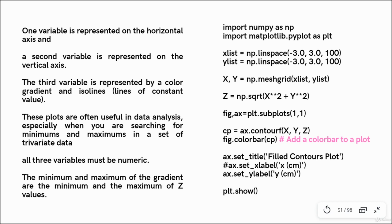The minimum and maximum of the gradient are the minimum and the maximum of the z values, because it's the third variable which is represented by the color gradient. So by default, the minimum and maximum of the gradient would be the minimum and maximum of the z values. To draw a contour plot, we need to import numpy and import matplotlib, then define the array of xlist and ylist using the np.linspace function.